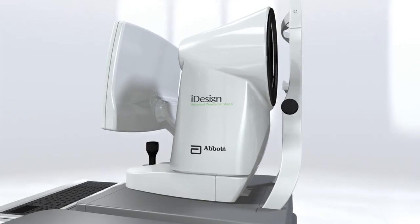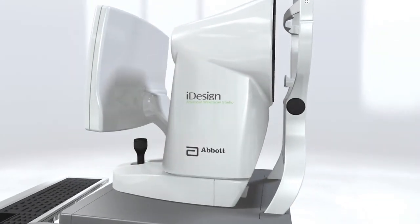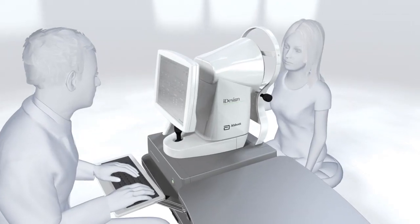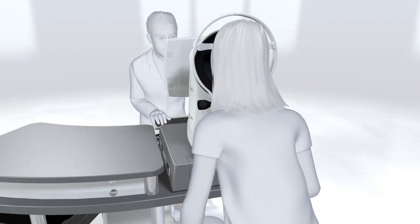In the iDesign system, the light does all the work. While the patient looks in the direction of the target, several measurements of the visual system are mapped.